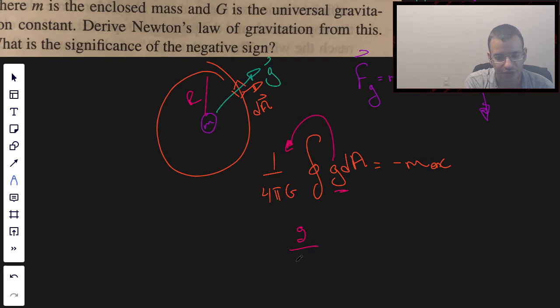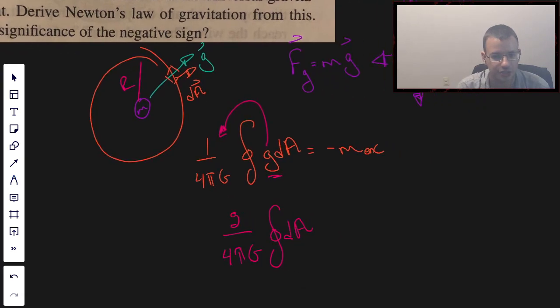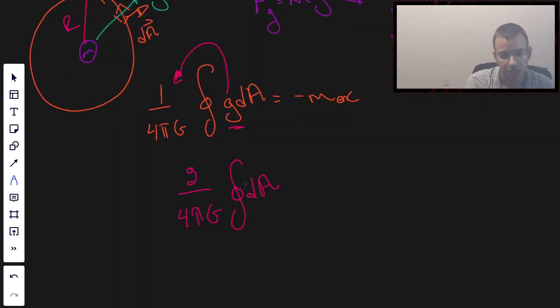Small g, which is the gravitational field, integral dA. And I probably should do a little symbol there just to show that it's a closed surface.